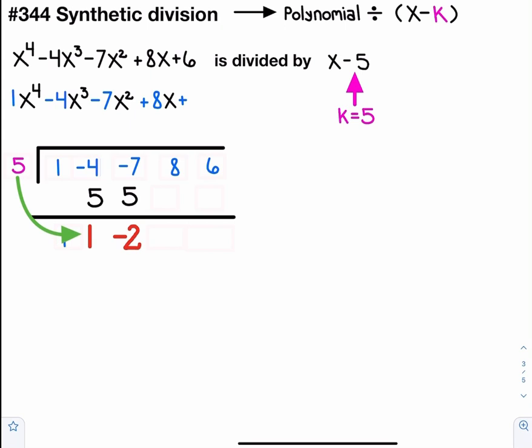Now we'll multiply that five out front by the negative two, which is negative ten. Add, so eight and negative ten make negative two.